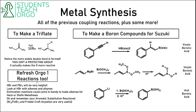It's good to review some earlier Orgo 2 reactions and even a few Orgo 1 reactions. Aromatic substitution is going to be crucial — there will be a lot of metal synthesis questions that require you to remember Friedel-Crafts and bromination and chlorination. Sometimes we're also going to need HBr or PBr3 to make those alkyl or vinyl bromides that we need for those coupling reactions.